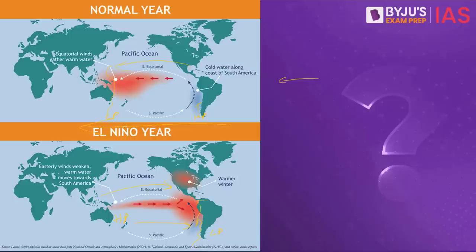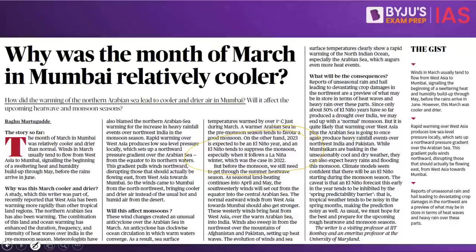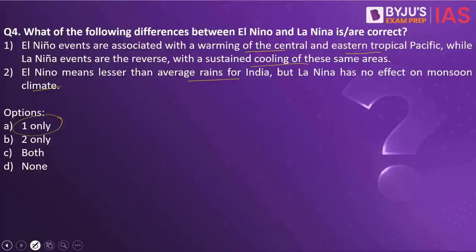So remember: during El Niño, India will not get much rainfall. The opposite occurs during La Niña — India will get much better rainfall. So the first statement is right. But the second statement is wrong because La Niña does have an impact on India, as we will have more monsoons.